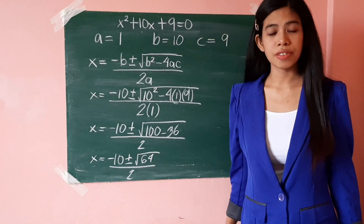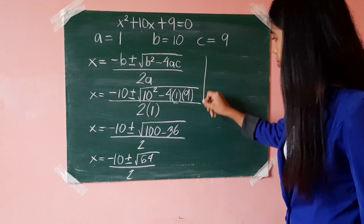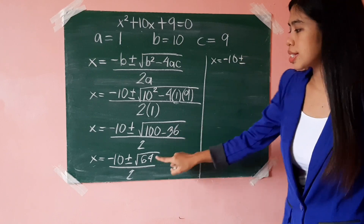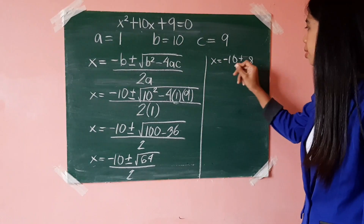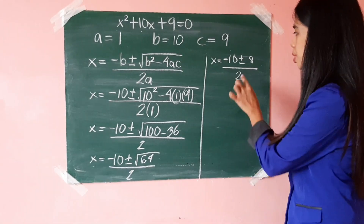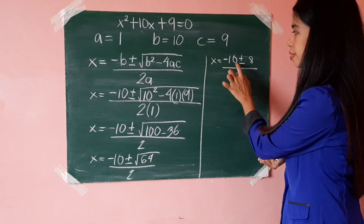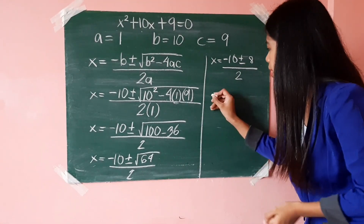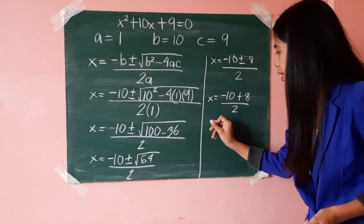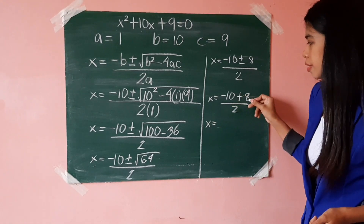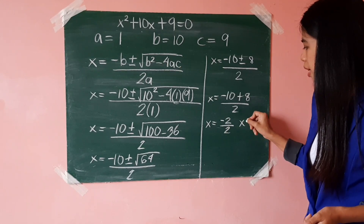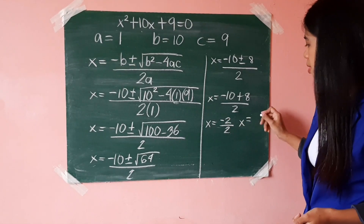The square root of 64 is 8, so we have x equals negative 10, plus or minus 8, all over 2. We are after two values of x. For the first value, x equals negative 10 plus 8, divided by 2. That's negative 10 plus 8 is negative 2, divided by 2, so the first value of x is negative 1.